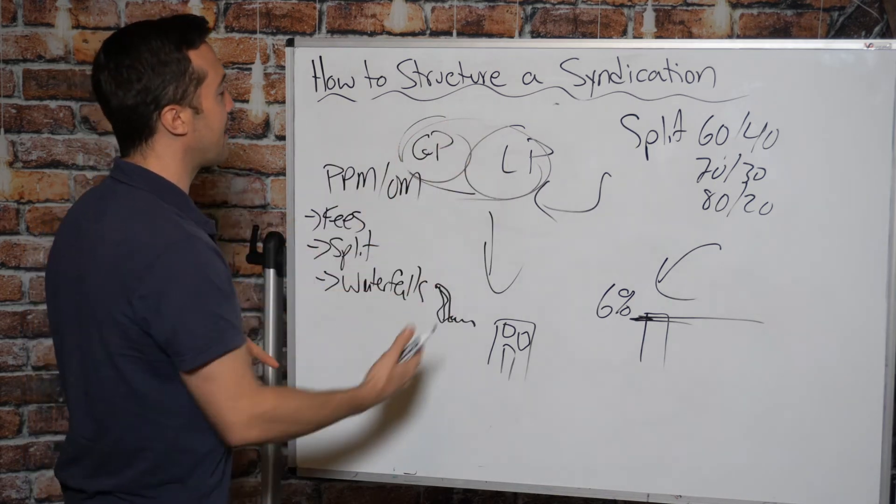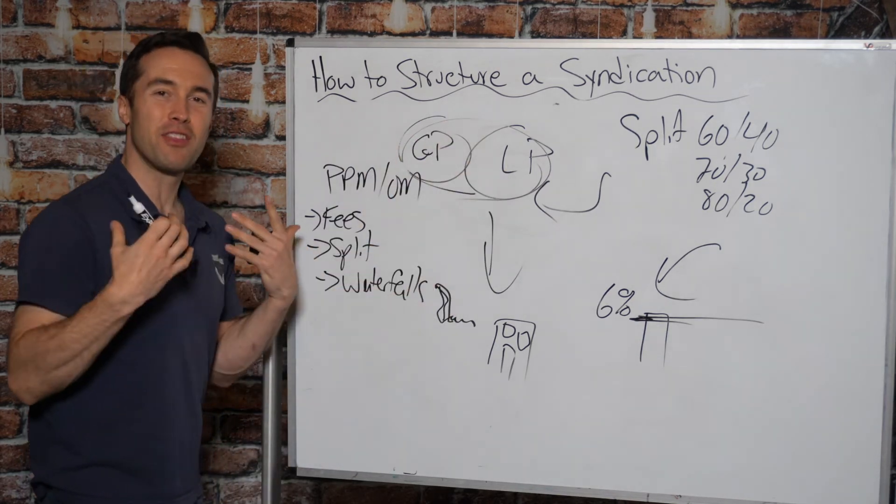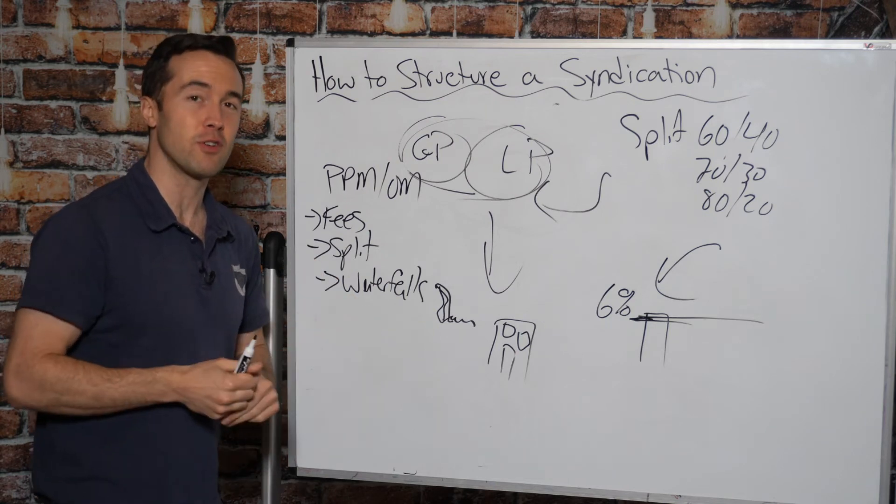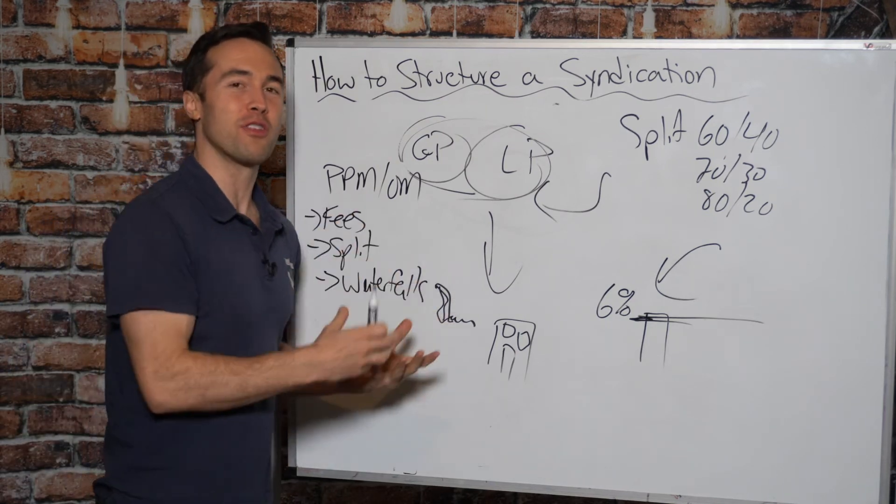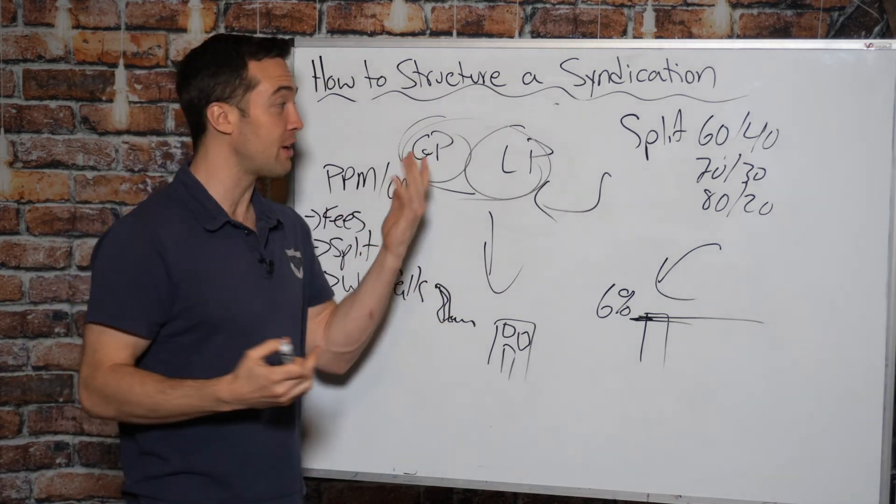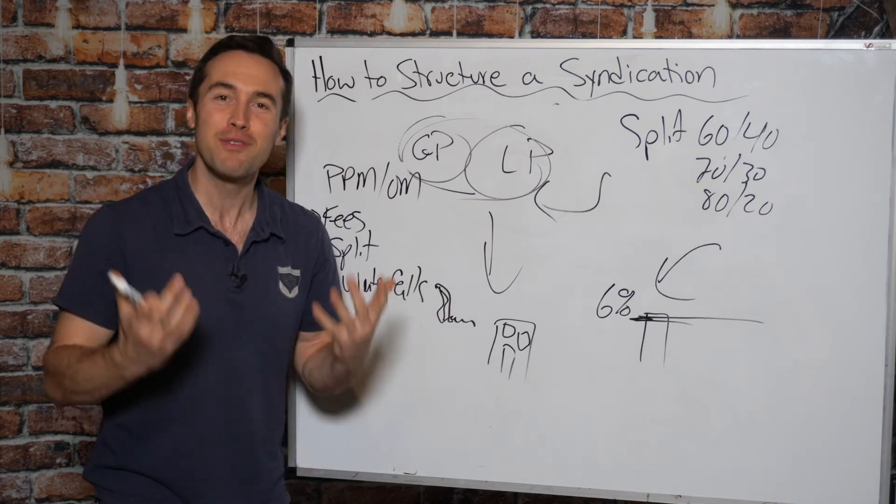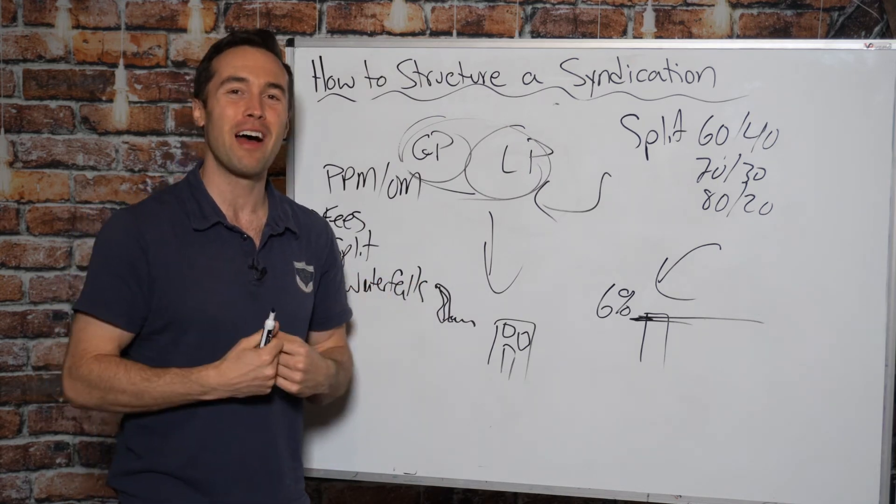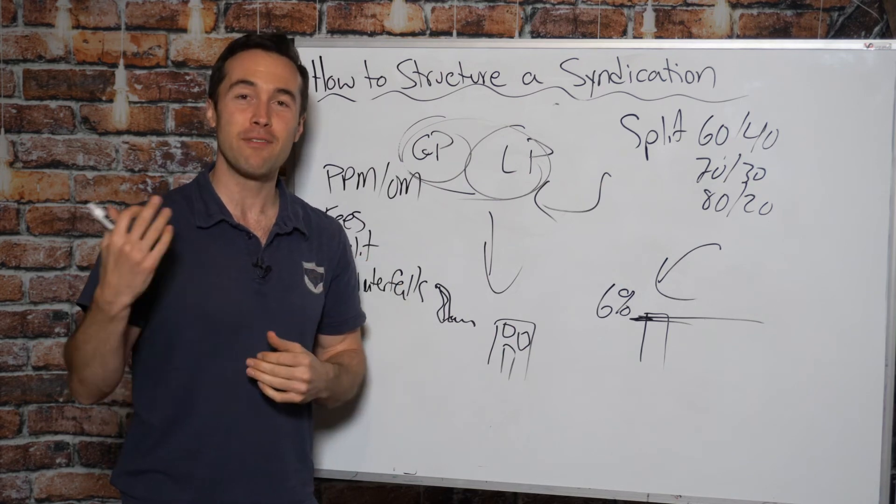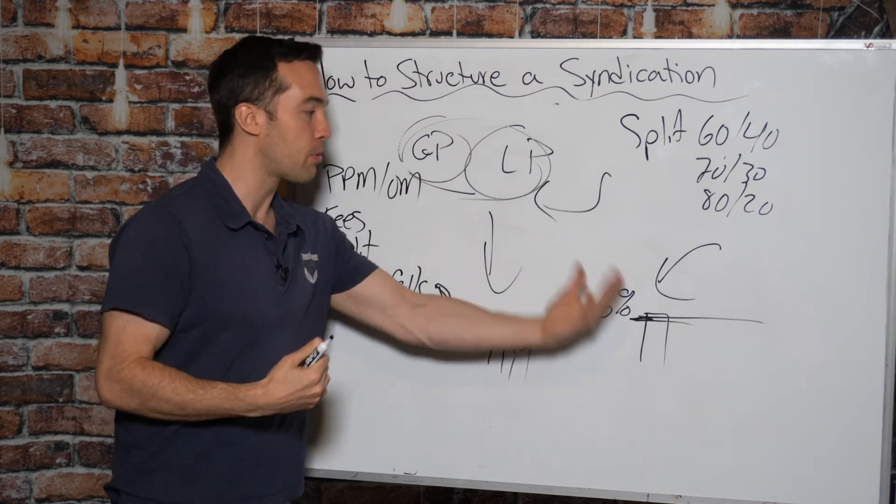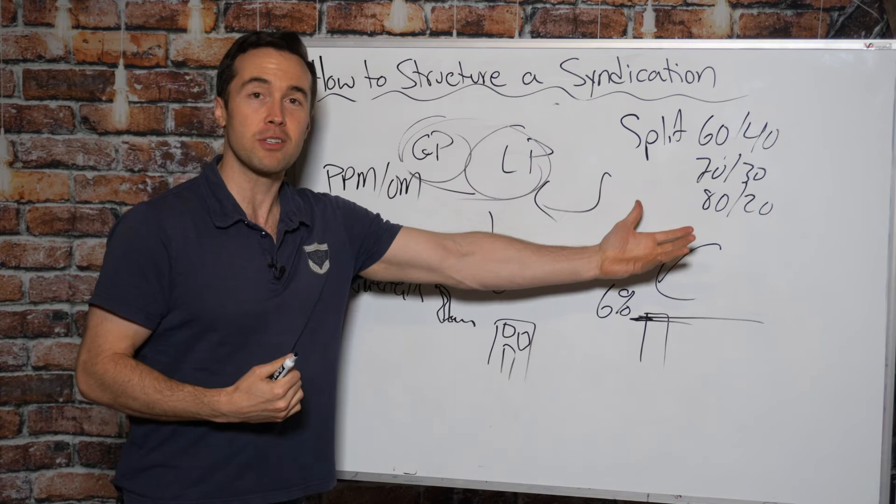Waterfalls, hurdles that are going to be involved in the deal. And when you're structuring your syndication, you have to make sure that the terms you're offering are attractive to investors. You can't skew all the terms so it's only benefiting the general partnership because nobody will want to invest with you. So you have to make sure, and the market is competitive.